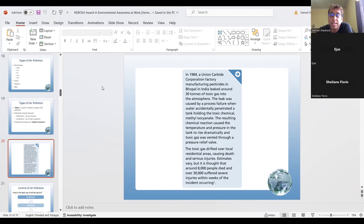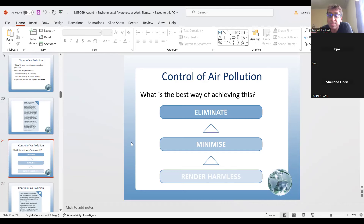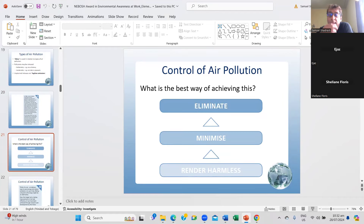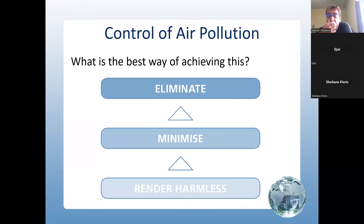The control of air pollution: the best way of achieving this is to eliminate, minimize, or render harmless. You need to learn that — remember, the NEBOSH multiple choice exam is not open book.